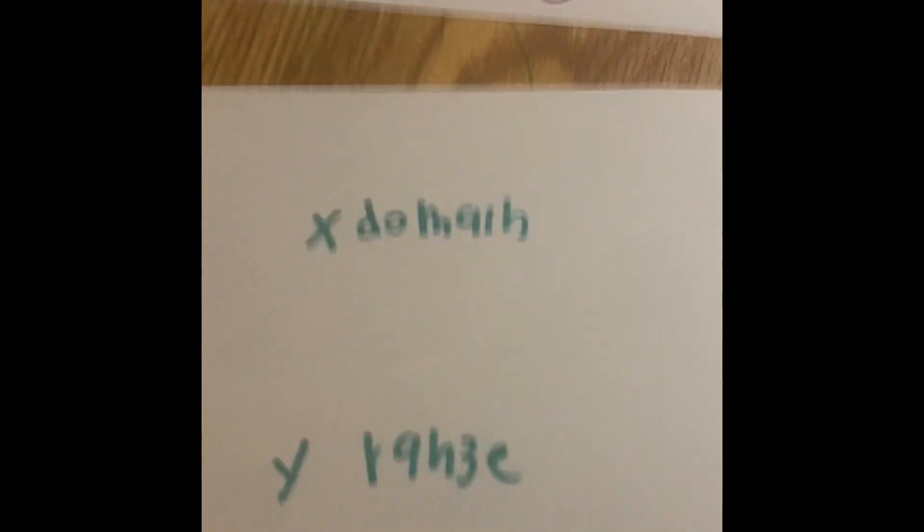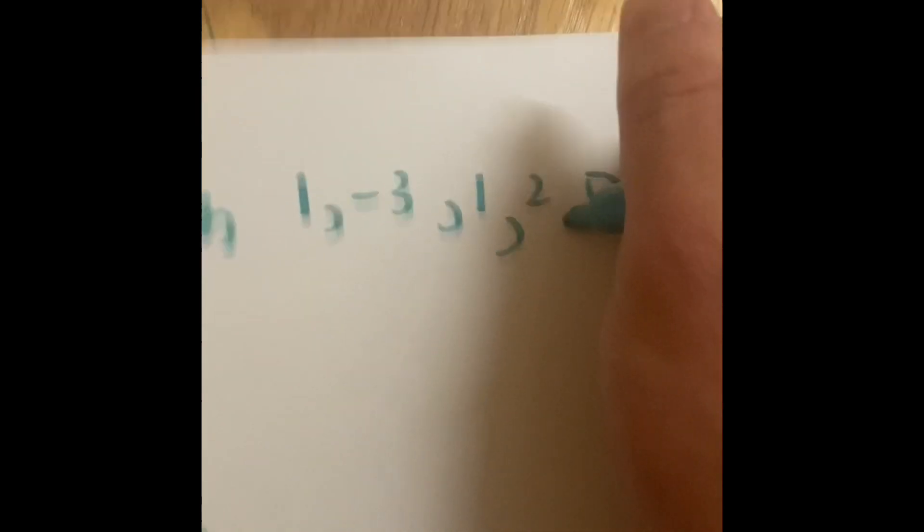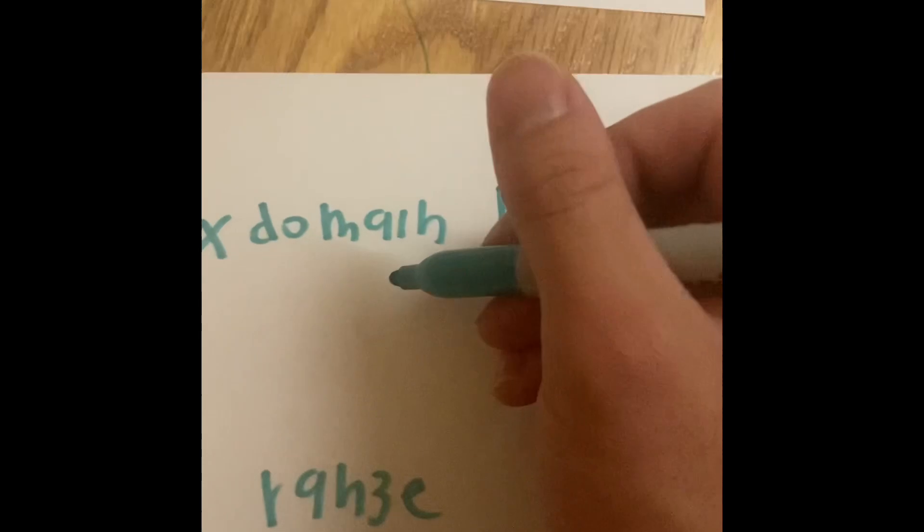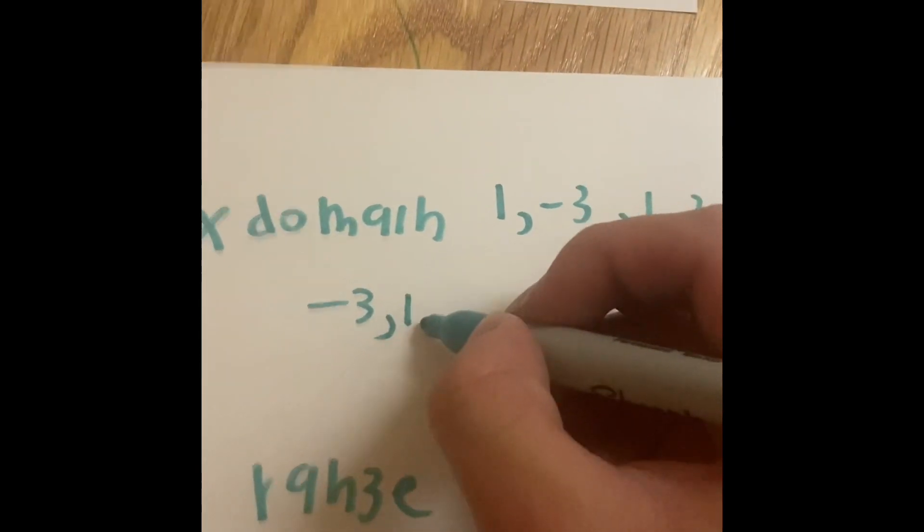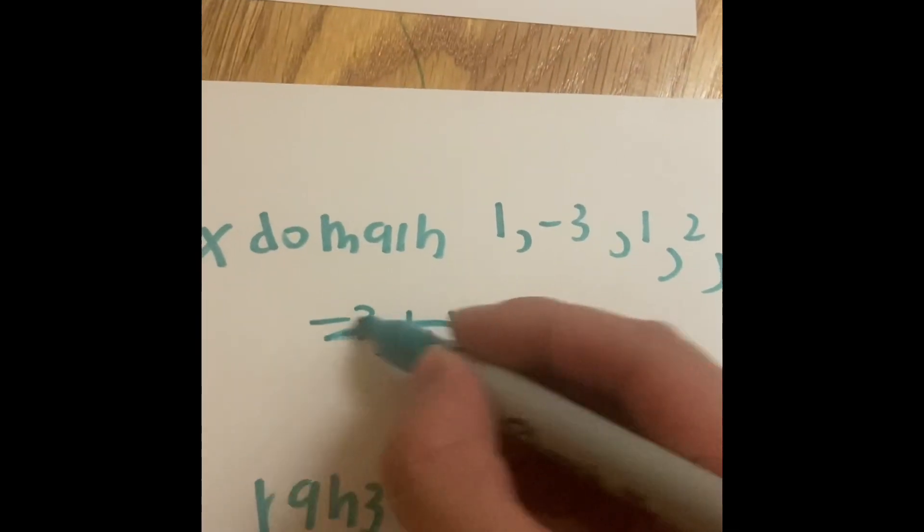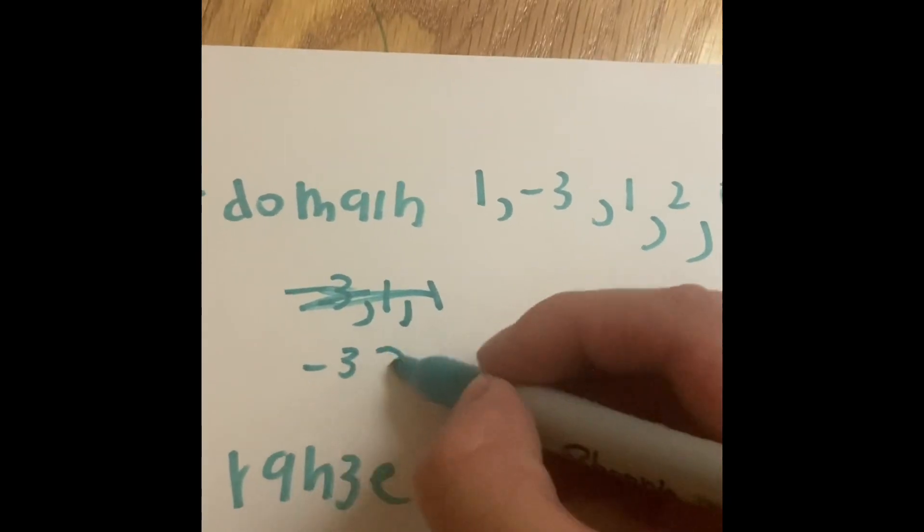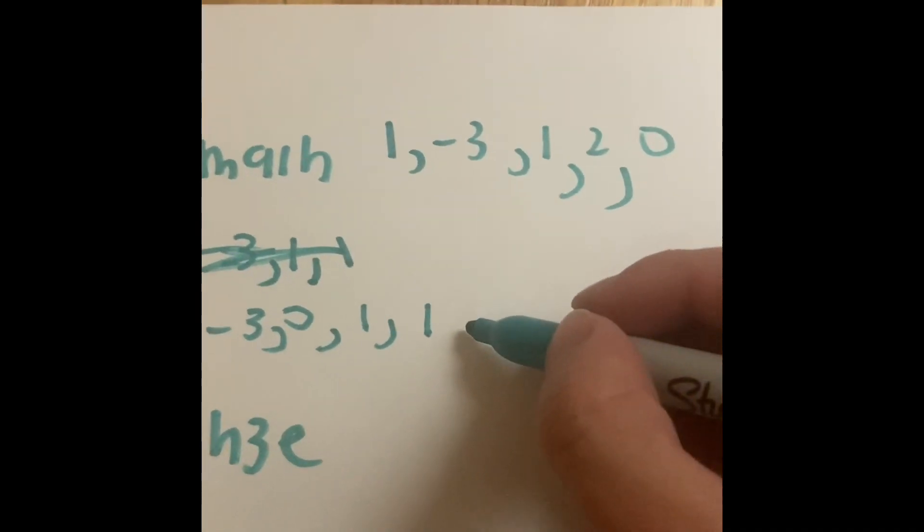So for the x's, we have 1, negative 3, 1, 2, and 0. If you want to put that into numerical order, you say negative 3, 0, then a 1, then 1 again, then 2.